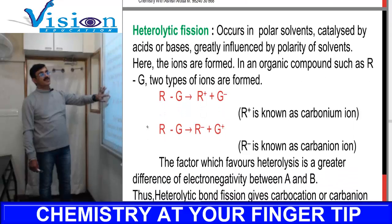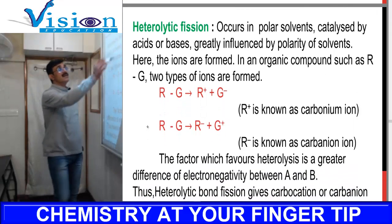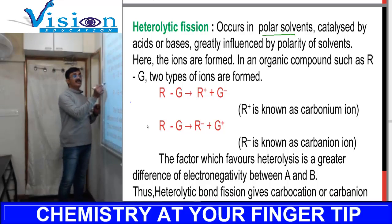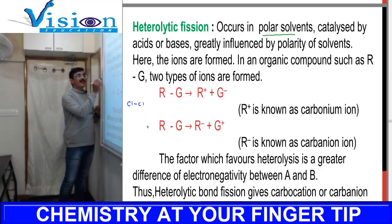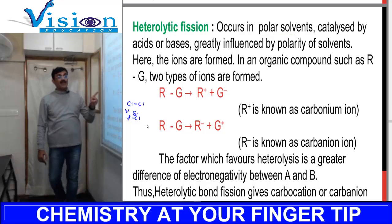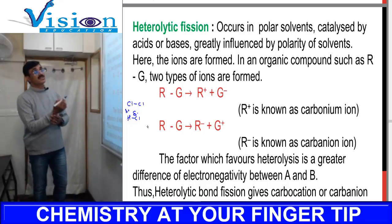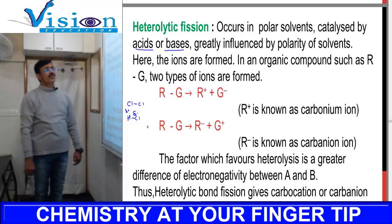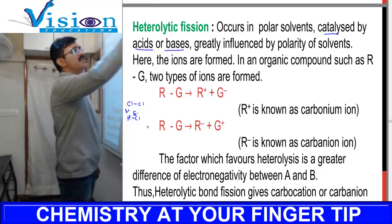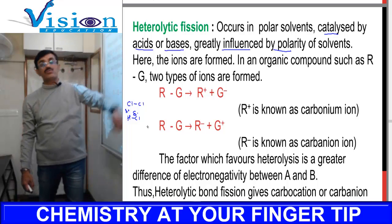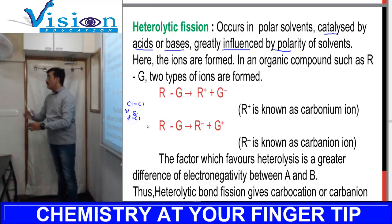Now we learn about heterolytic fission. It normally occurs in polar solvents. For example, Cl2 is non-polar, but HCl is polar. Heterolytic fission is catalyzed by an acid or a base used as a catalyst, and it is greatly influenced by the polarity of the solvent — even water's polarity matters here.